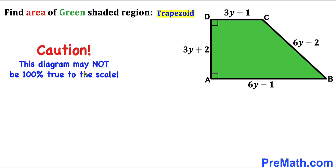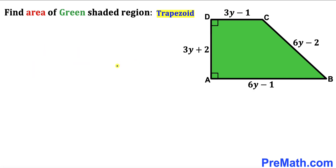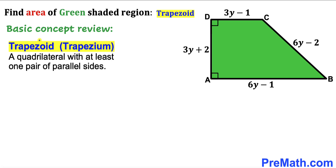Please keep in mind that this figure may not be 100% true to scale. Let's go ahead and get started. Before we proceed, let me go over the basic concepts. A trapezoid — sometimes called a trapezium — is a quadrilateral with at least one pair of parallel sides.